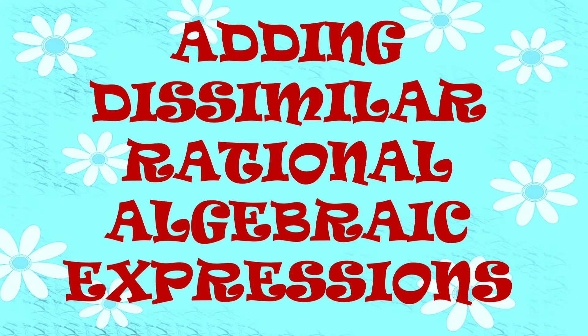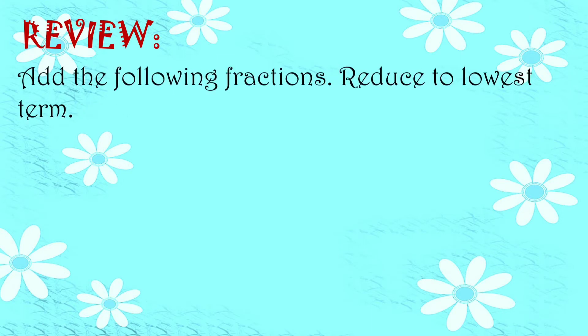So when you say dissimilar RAE, ito na yung hindi magkaparehas yung denominator. So para makapag-add tayo ng dissimilar RAE, una natin gagawin, kailangan maging magkaparehas sila. Kailangan maging similar RAE muna sila bago tayo makapag-add. Pero bago yan, mag-fraction muna tayo. So add the following fractions, reduce to lowest term.